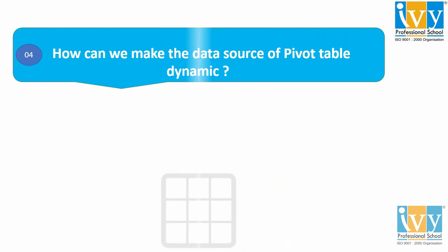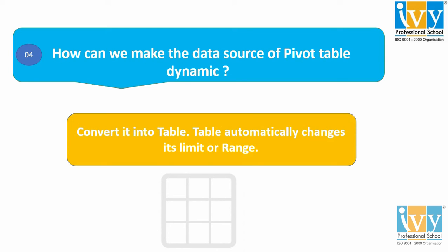Question number four: how can we make the data source of a pivot table dynamic? By simply converting it into a table. When we convert it into a table, the range of the table automatically changes, which makes the pivot table dynamic.